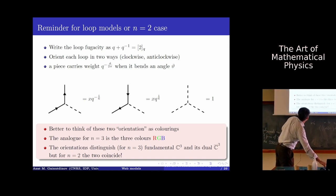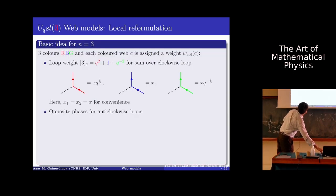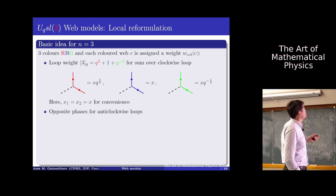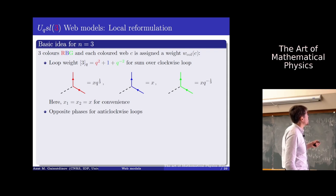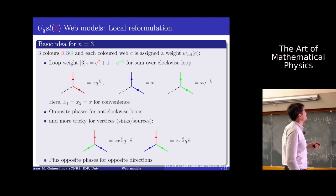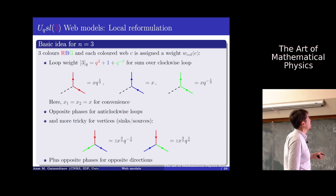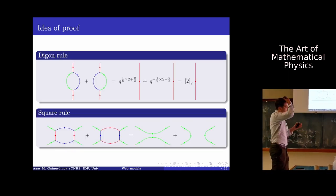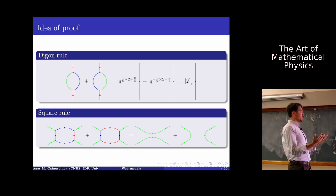In the U_q(SL3) web model, the loop weight is Q² + 1 + Q⁻², and we have three colors, so we put Q^(1/3) or Q^(−1/3) on each bond. Summing over all colorings of a loop gives 3Q. The tricky part is the vertices: depending on the arrangement of colors, we put Q^(−1/6) or Q^(1/6), plus the local fugacity weights. The key result is that when you take a given uncolored configuration and sum over all possible colorings with these local rules, you recover the non-local Kuperberg weight.